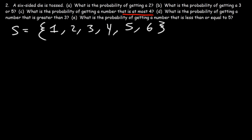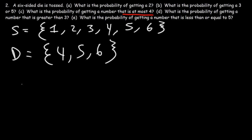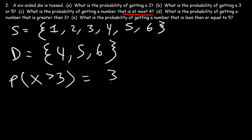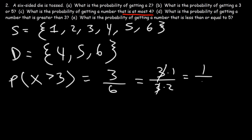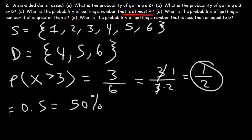What is the probability of getting a number that is greater than three? Numbers greater than three include 4, 5, and 6 — but not three itself. So there are three favorable outcomes out of six. Three over six reduces to 1/2 = 0.5, meaning a 50% chance of event D occurring.